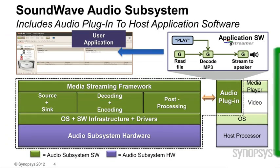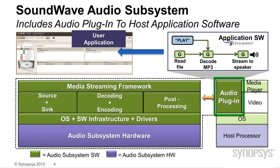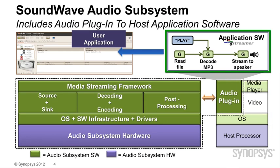The subsystem is integrated in an SoC, and the software is integrated into the application running on the host processor. For this, we provide a unique software plugin. We selected GStreamer as the standard, since it is supported in many systems, including Linux and Android. This is a fully configurable solution. You can create a complete subsystem, including all the hardware and software, in less than an hour, rather than weeks or months, compared to manual integration and verification.